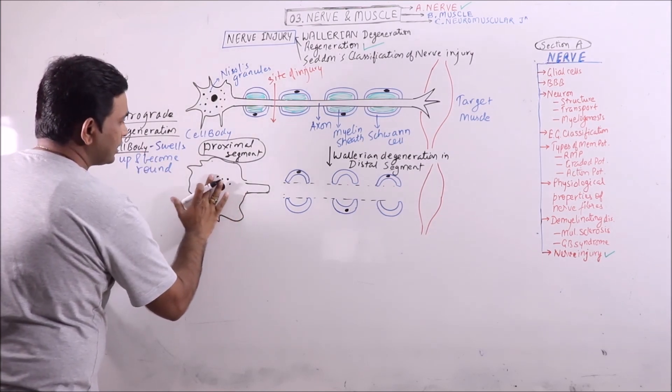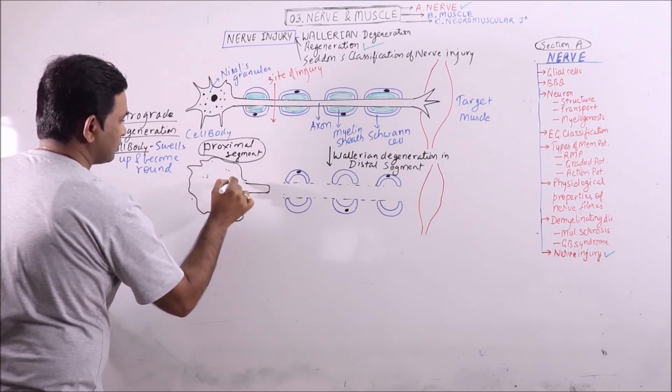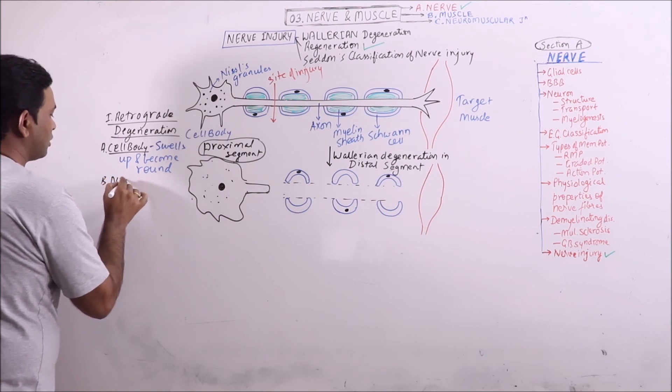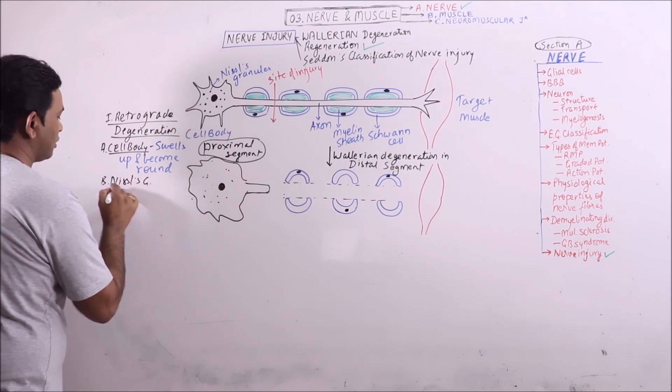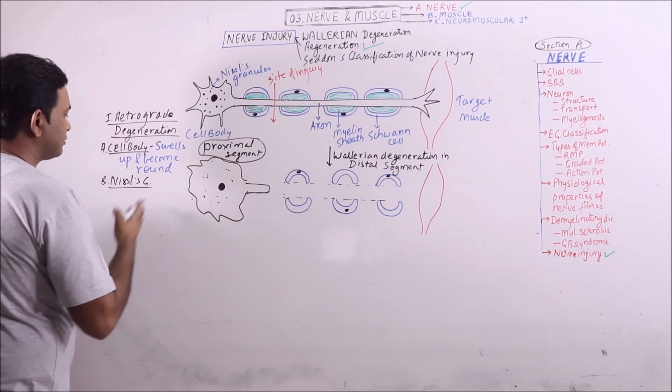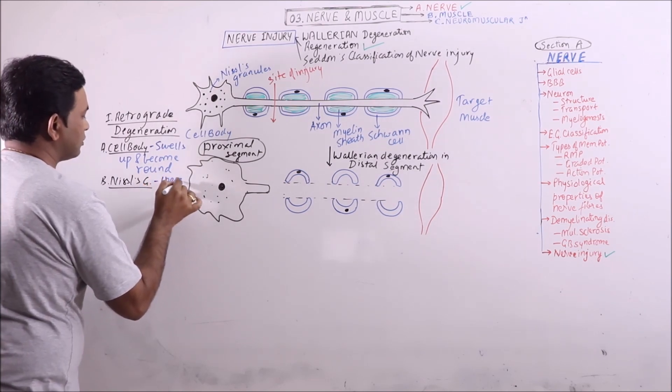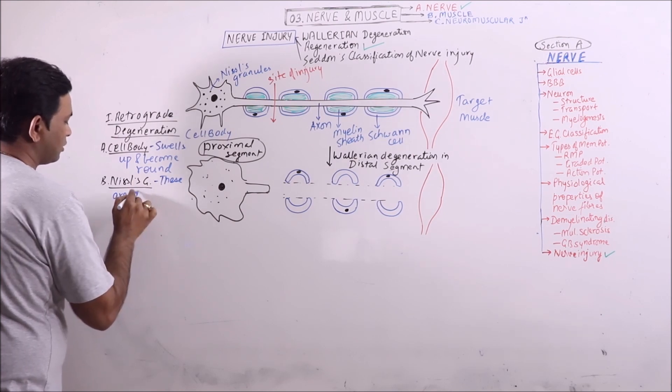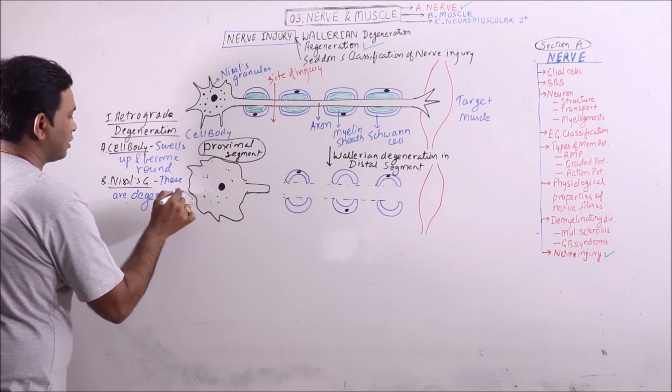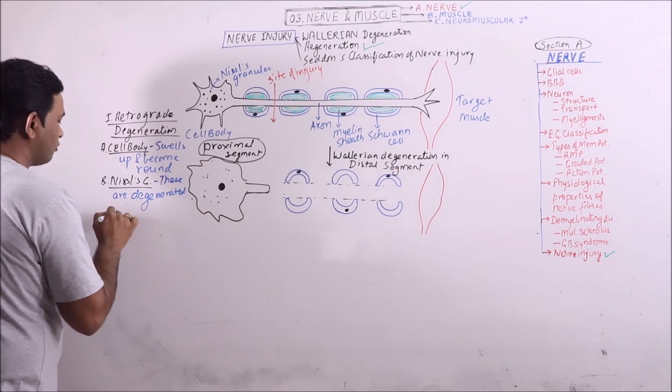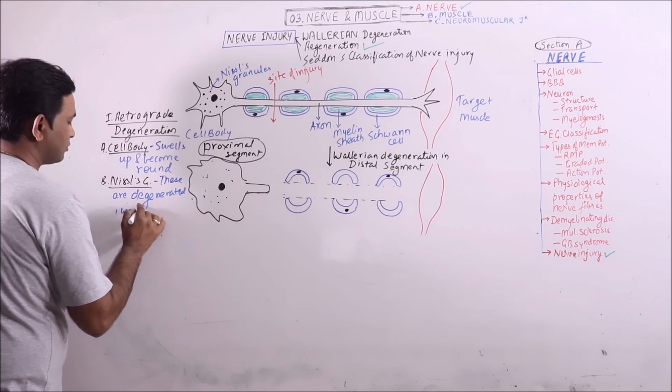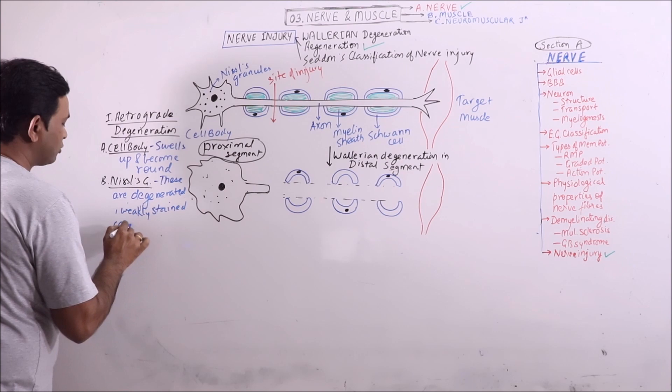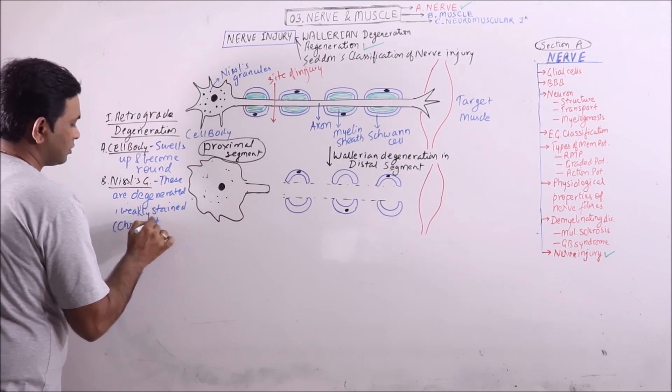The Nissl granules are degenerated and now weakly stained. The endoplasmic reticulum, this is known as chromatolysis.